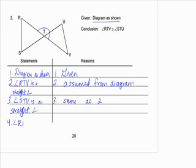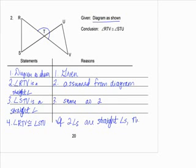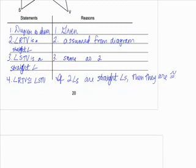You can say angle RTV congruent to angle STU. The why was the theorem we just learned. If two angles are straight angles, and you write it out in if-then form every time, then they are congruent. Any type of abbreviation that you see me doing is okay for you to do. Alright. Let's do one more together today.